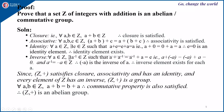Inverse: for all a belonging to Z, there exists a-inverse belonging to Z such that a plus a-inverse equals a-inverse plus a equals e, which is the identity element. Since the identity element is 0, we have a plus (−a) equals (−a) plus a equals 0, and a-inverse equals −a belonging to Z. Therefore the inverse element exists for each a. Since Z with addition satisfies closure, associativity, has an identity, and every element of Z has an inverse, Z+ is a group. Further, a plus b equals b plus a, so the commutative property is also satisfied. Therefore Z+ is an abelian group.